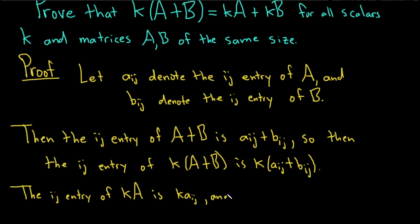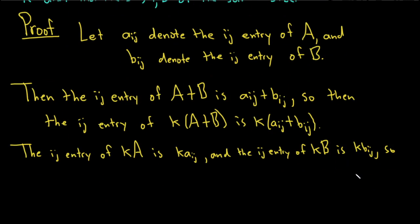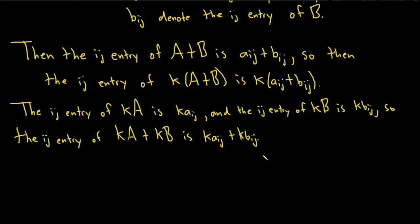And the ij entry of kB is kbij. So the ij entry of the sum kA plus kB is kaij plus kbij. Note, since kaij and bij are scalars from a field, the distributive law holds.